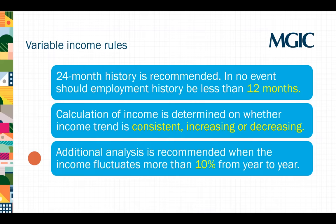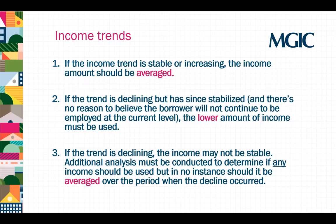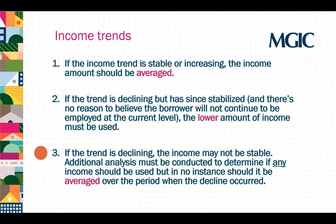Fannie Mae and Freddie Mac have provided the following guidance for income trends. If the amount of income is stable or increasing, the income should be averaged. If the trend is declining but has since stabilized and there's no reason to believe the borrower will not continue to be employed at the current level, the lower amount of income must be used. If the income is declining, the income may not be stable. Additional analysis must be conducted to determine if any income should be used, but in no instance should it be averaged over the period where the decline occurred.